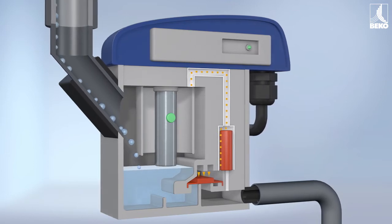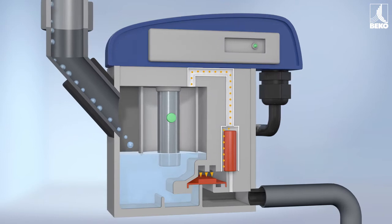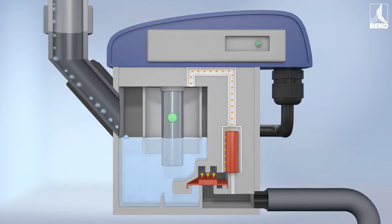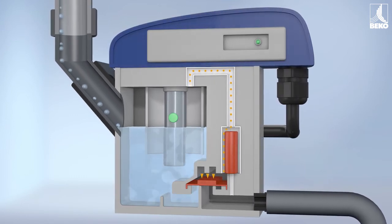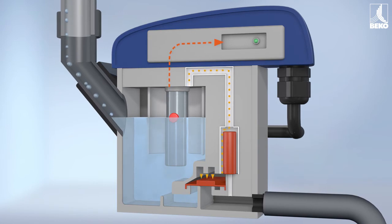Once again, as the condensate flows in, the membrane remains closed due to system pressure. Its larger upper surface provides the necessary closing force on the valve seat and seals it tightly. When the BEKOMAT is full, the solenoid valve is activated.